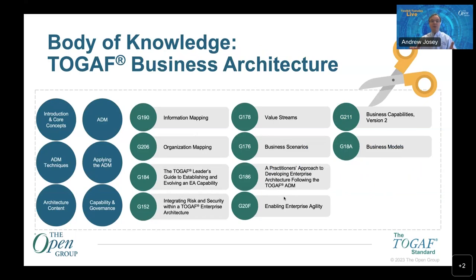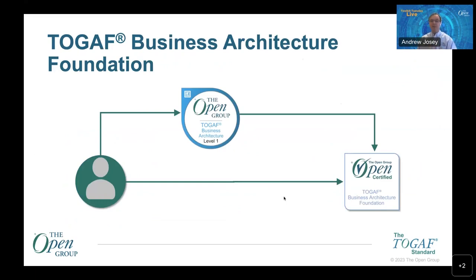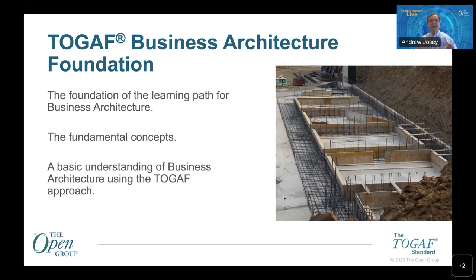For business architecture, the body of knowledge is a different subset, drawing on the quite a few business architecture TOGAF series guides now available. There are a couple of paths to business architecture. You can go afresh, and we also have an existing certification credential with a migration path for individuals who've already got that credential — they'll basically do a top-up of about four additional modules over what they've done previously. Like the EA Foundation, this is about fundamental concepts, getting basic understanding and the language, with a rich set of techniques you can apply to develop a business architecture.